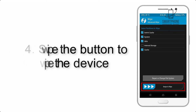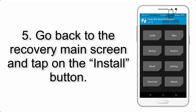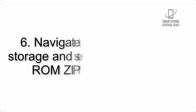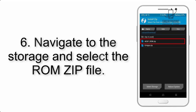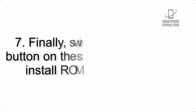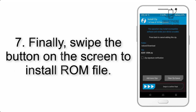Step 4: Swipe the button to wipe the device. Step 5: Go back to the recovery main screen and tap on the Install button. Step 6: Navigate to the storage and select the ROM zip file.